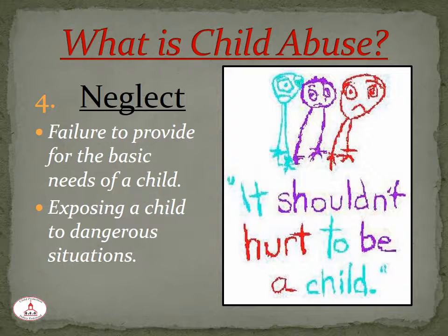The last category, neglect, can involve a variety of dimensions. Emotional neglect includes the failure to provide the love, nurture, and availability that children need. Physical neglect is failure to provide the basic needs of food, clothing appropriate to the weather, and shelter, or exposing a child to dangerous situations, such as allowing them to play near a busy highway unsupervised, or exposing them to violence such as domestic violence, or to drugs. Medical neglect involves failure to obtain needed medical care. The final dimension is educational neglect, in which parents do not ensure that the child goes to school or learns in some other way the basic material required by state law.